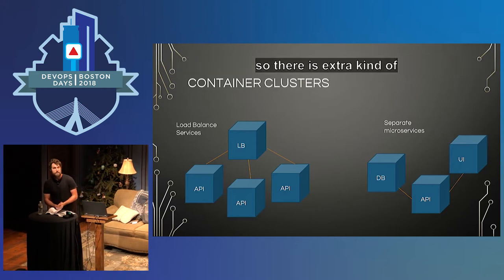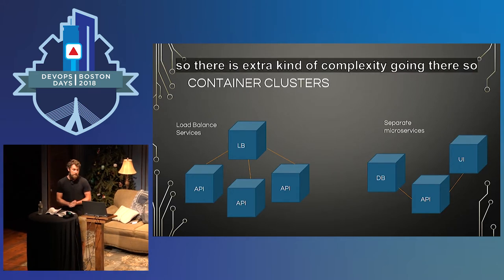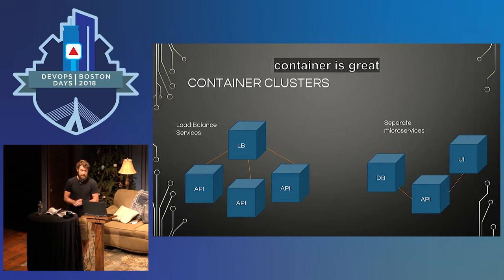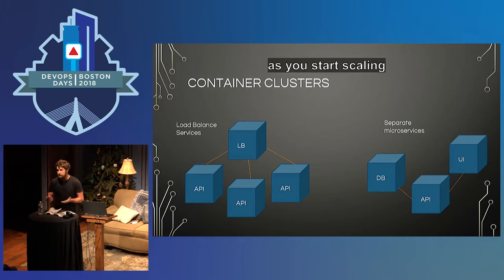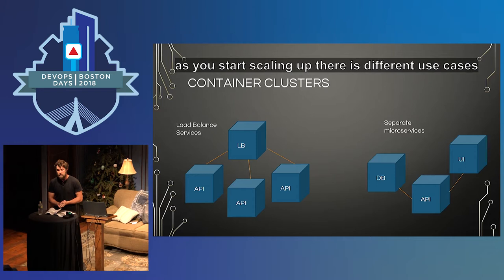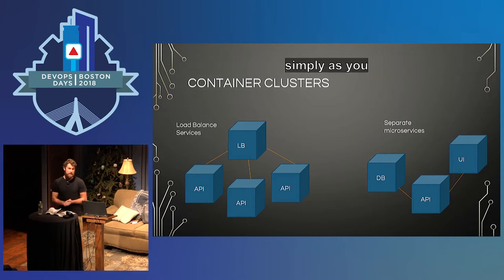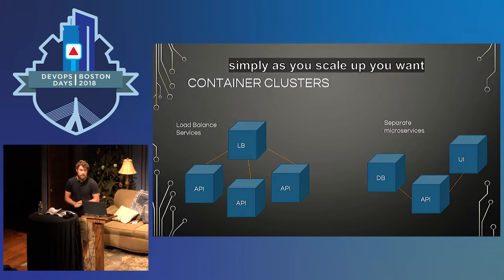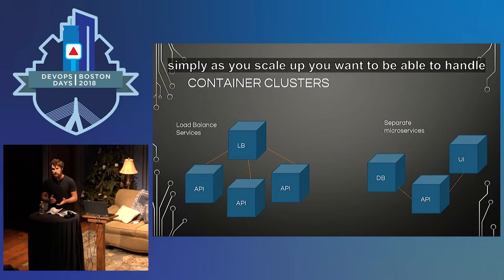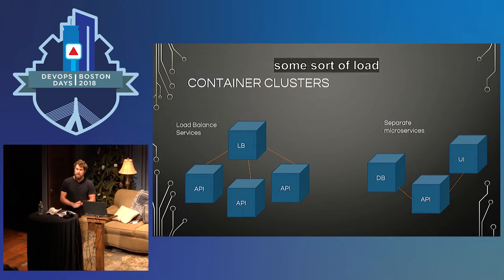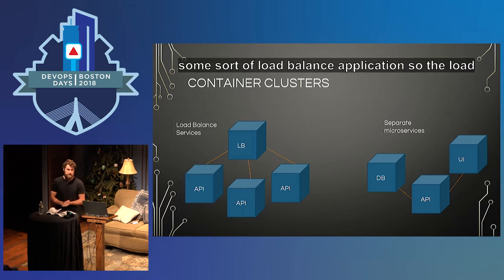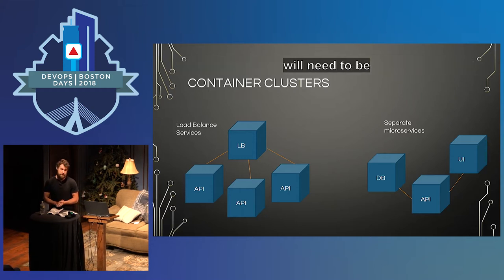If one container is great, multiple containers are even better. As you start scaling up, there are different use cases. Simply to handle higher concurrency and higher throughput, you'll want some sort of load-balanced application. The load balancer needs to be aware of the other containers — knowing their ports, IP addresses, and such — so there has to be some sort of sharing of information.